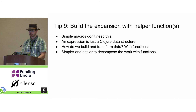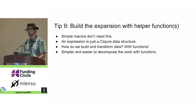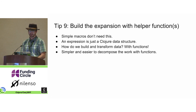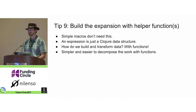And lastly, tip nine: build the expansion with helper functions. If it's a really simple macro you don't need to do this, but if your macro is doing any sophisticated transformation of the input expressions, remember that those expressions are just Clojure data structures — it's just a list, usually, with some embedded other data structures in it, perhaps. How do we deal with data in Clojure? We use functions. You can have multiple helper functions that you're calling to build up your expression, maybe making multiple passes on the input expressions. It's really a lot easier to decompose the work that way. Note that functions too can use the syntax quote operator — it's not restricted to being inside of a macro context.